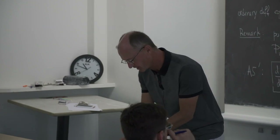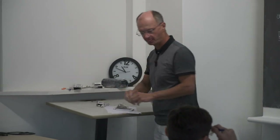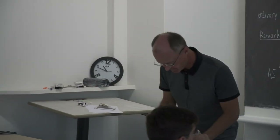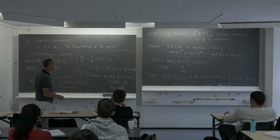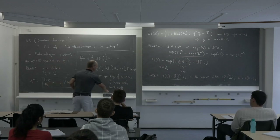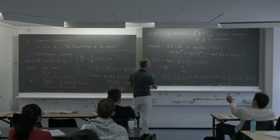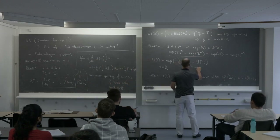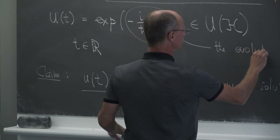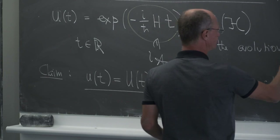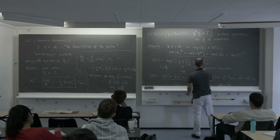This operator U(t) is called the evolution operator. The Hamiltonian H is also called the energy observable, and traditionally the eigenvalues of H are denoted E (for energy).